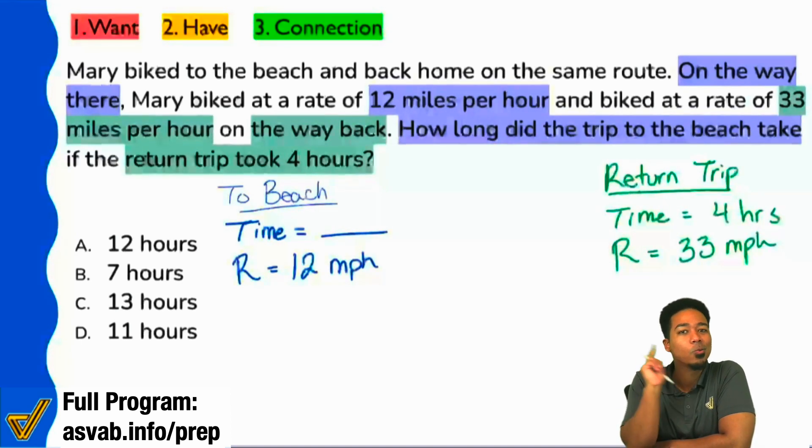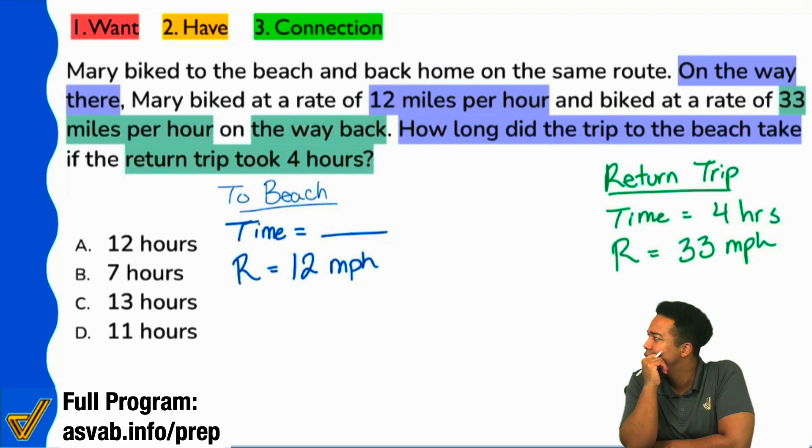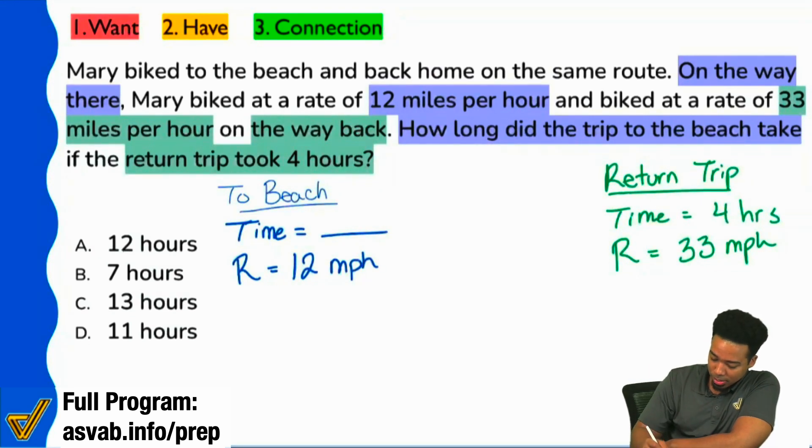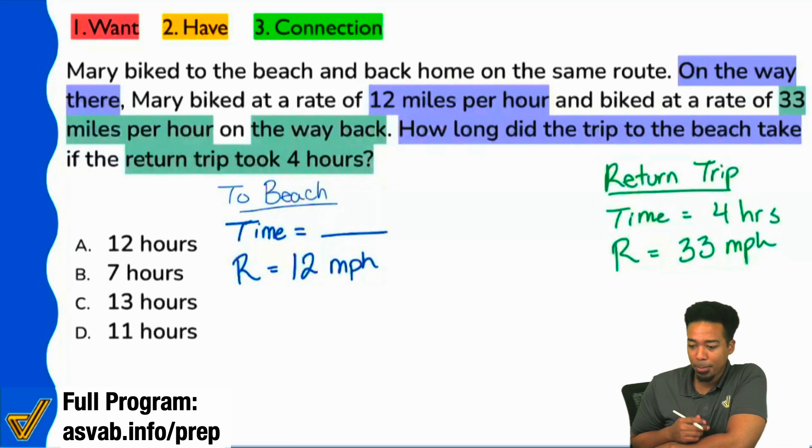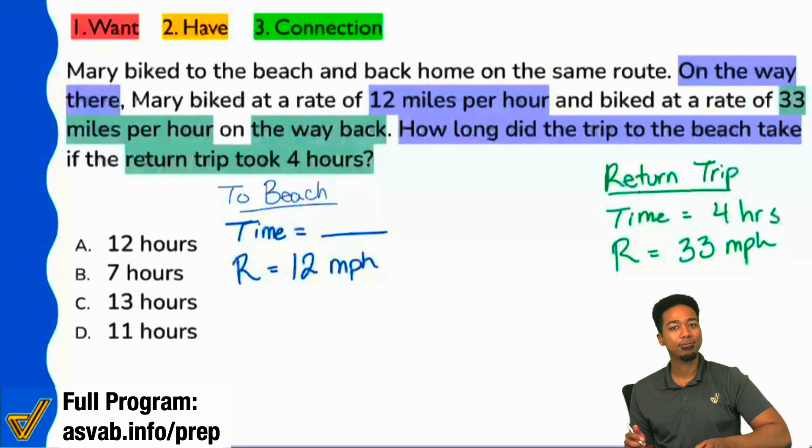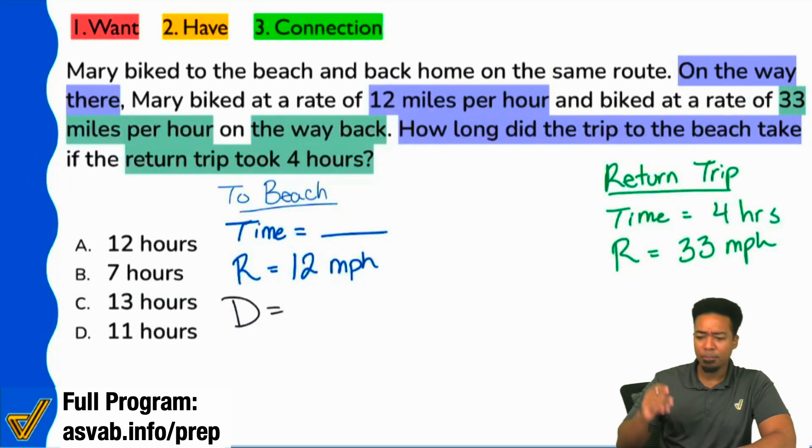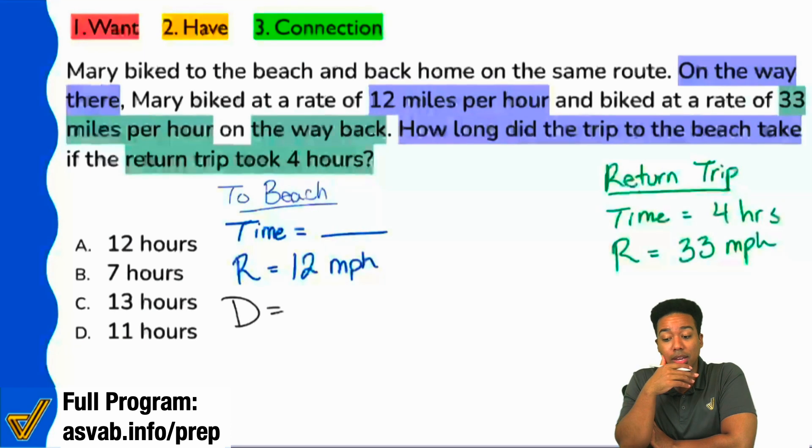So from here, what do we do? We wrote down all of our numbers. And now if we look closely at the side that we're trying to solve, we're trying to get the time to the beach. I have the rate to the beach. But one thing I'm missing is what? What am I missing from the side? What am I missing from this side? Yeah. I am missing the distance. Nowhere in the problem did it say distance. Nowhere in here did it say distance, but I need the distance to figure out what the right answer is.